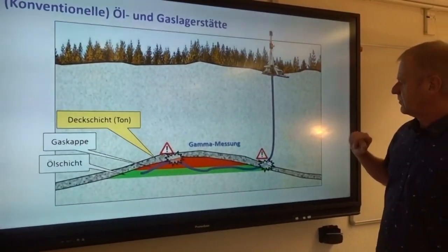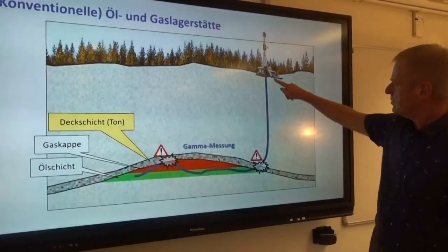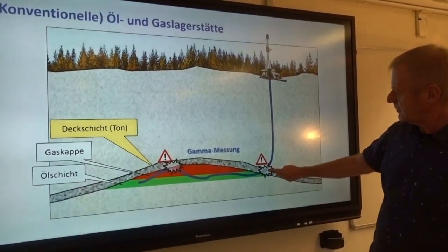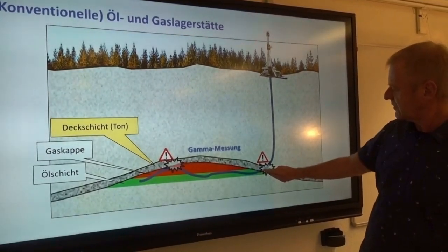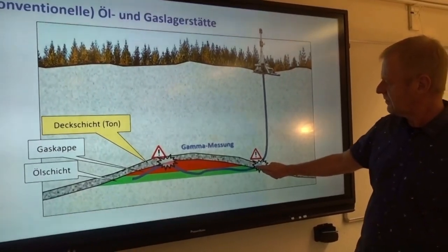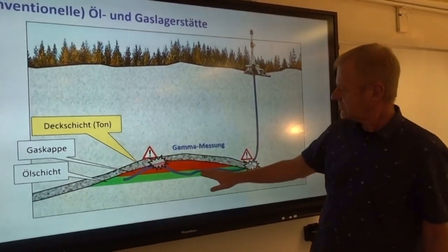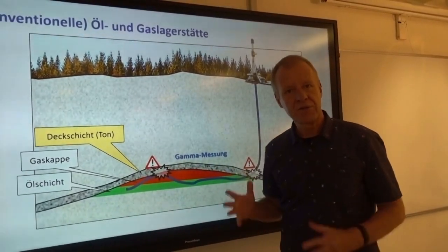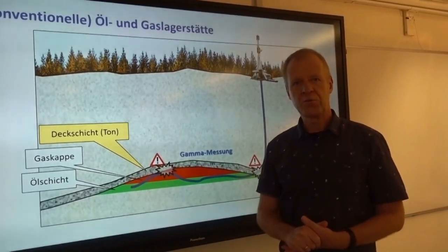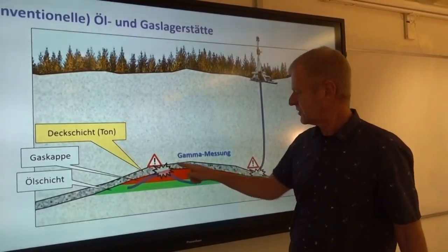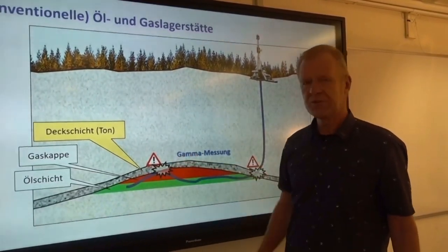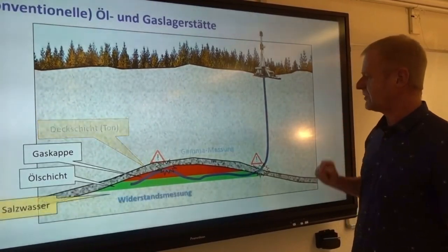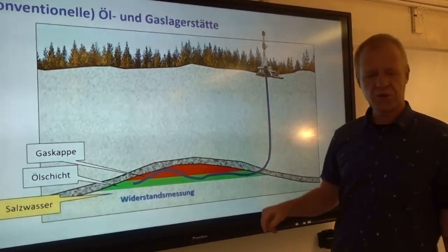With a gamma sensor like this, we can firstly see when we enter the reservoir, and secondly the gamma sensor always reports when we are too far up in the reservoir and we have to drill down again.